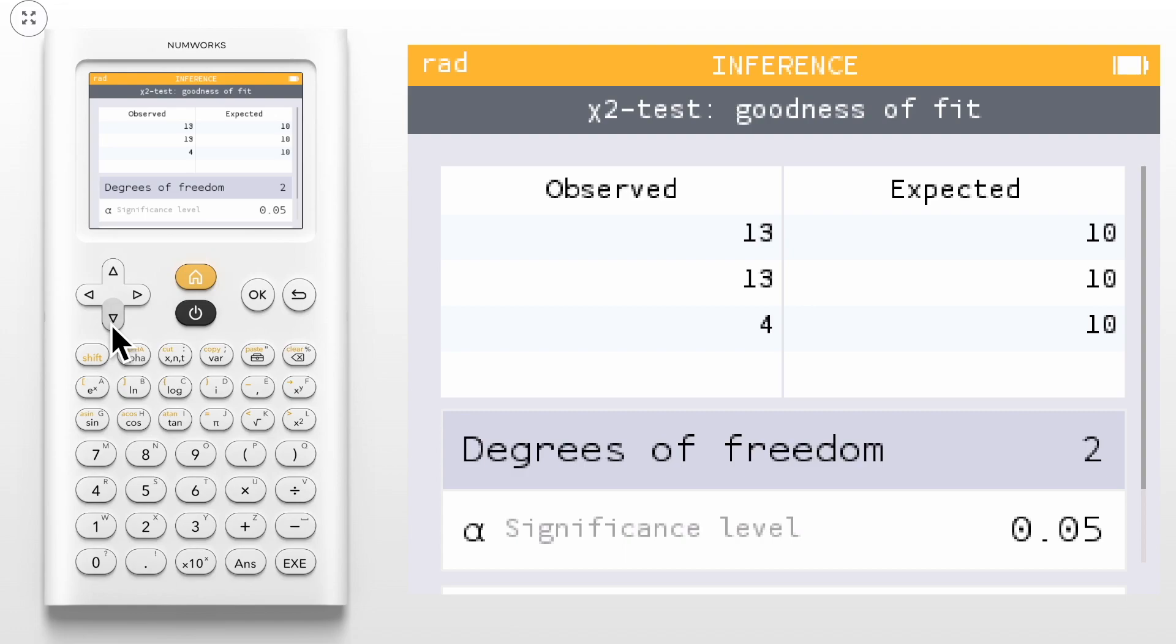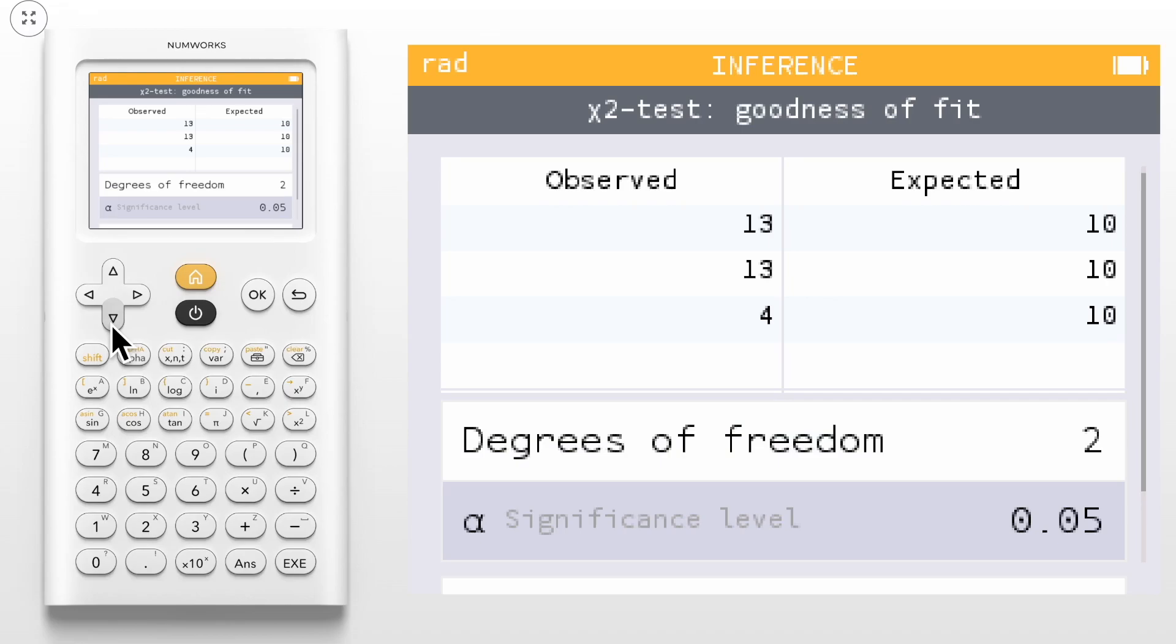Notice that the degrees of freedom are displayed below the table. We can also indicate our significance level. To change the significance level, press OK.